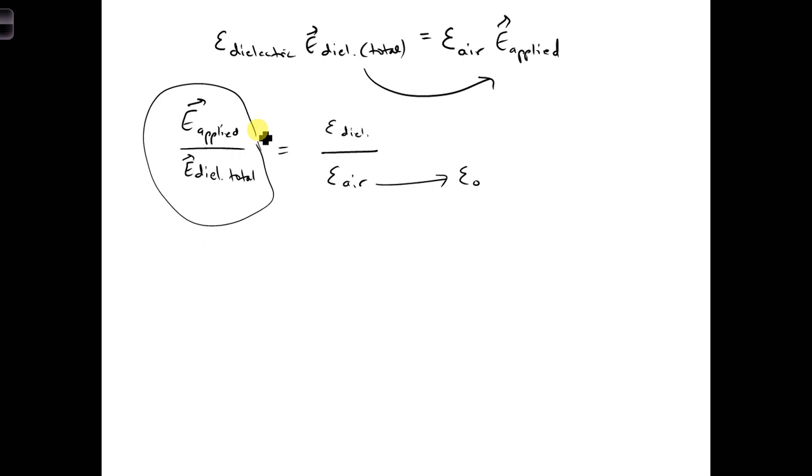It changes due to the dipole rotations. This gives us a factor of how much the electric field changes. Looking on the right side, we could define this ratio as being a number that tells us how much the electric field has changed, the ratio that the electric field has changed in the material.